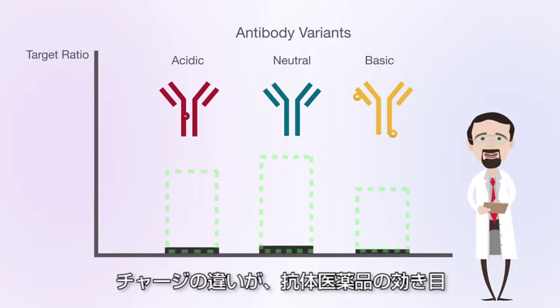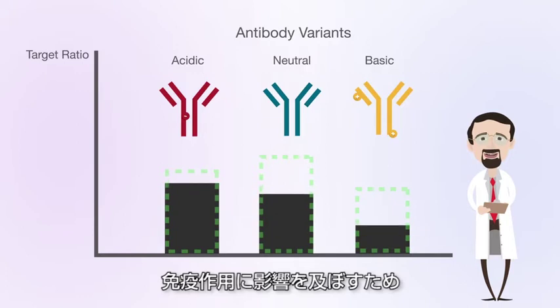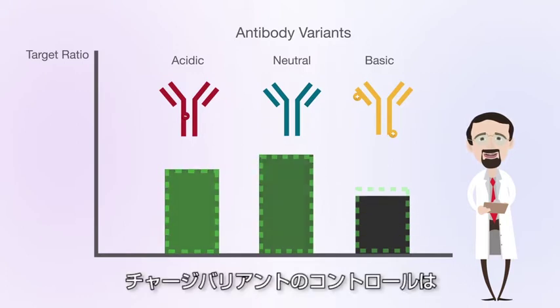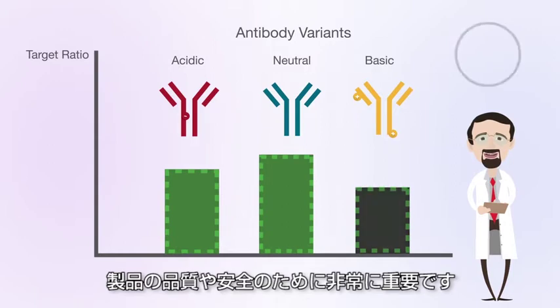Small variations in the charge of a protein can reduce drug efficacy or cause an immune response in patients. Therefore, controlling charge variance is critically important for product quality and safety.